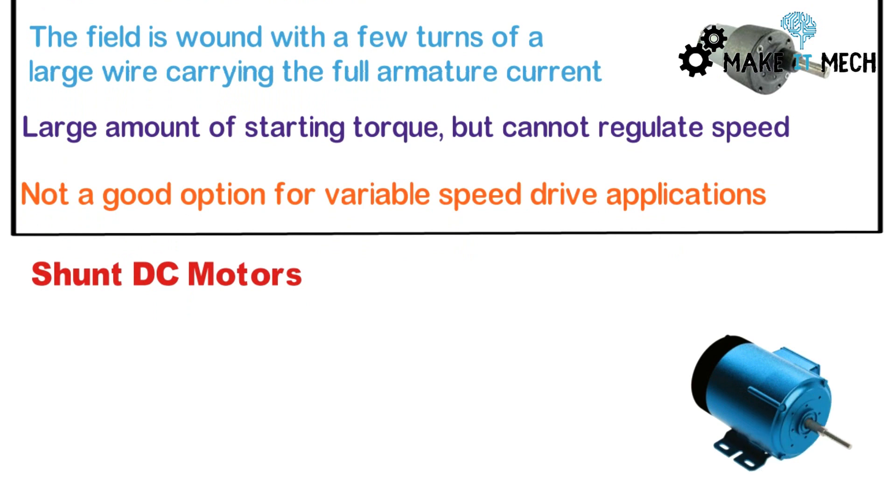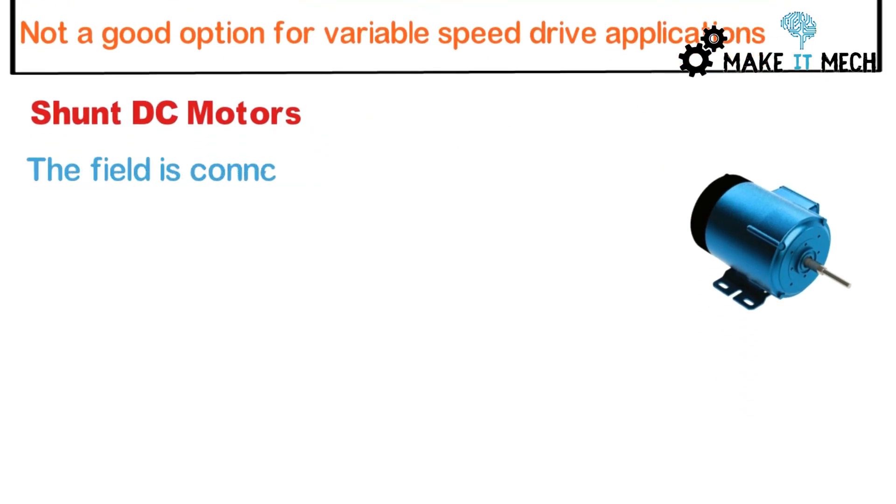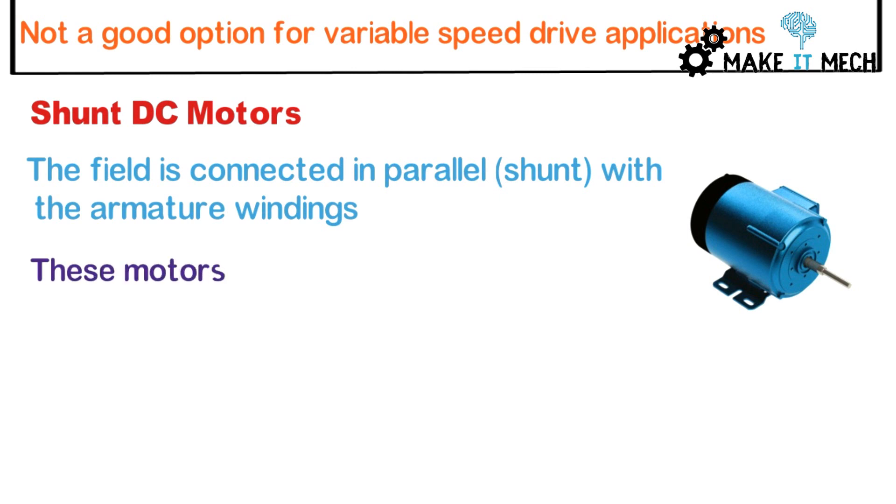Shunt DC motors. The armature winding is connected with the field in DC motors. These type of motors have good speed regulation, suitable for regulated speed drive applications.